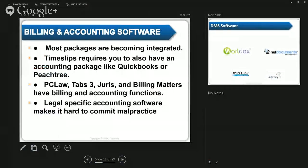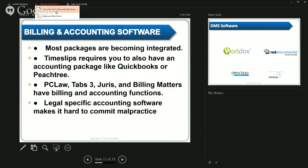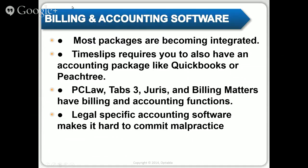There isn't anything that's completely integrated — some products advertise like they are, but they're not. You have to link things together. Clio will link with QuickBooks and with PC Law. Amicus will link with Time Slips and QuickBooks. You have a lot of different options. The way this usually works is you figure out what billing and accounting software you have, and then I give people a list of options of what it will work with.